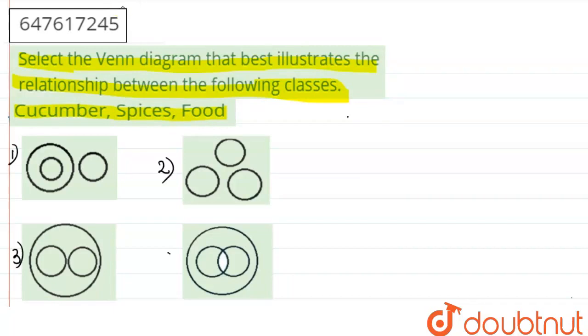So, first of all, we will see our three words, what is the relation between the three words. If you will see cucumber, it is actually a food, a thing that is eaten.